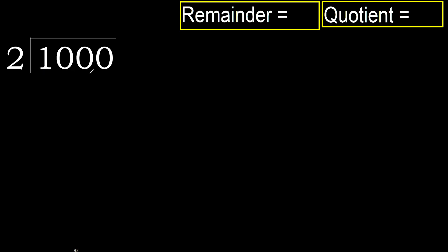1,000 divided by 2. 1 is less, therefore next. 10 is not less, therefore with 10.